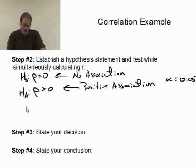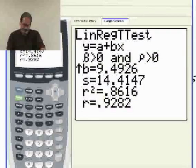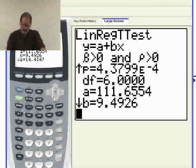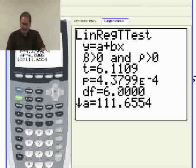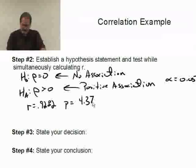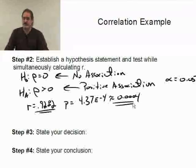Okay, so I know that r equals 0.9282, and the p-value was 4.37 times e to the negative 4, which is approximately 0.0004. So this correlation looks like it's pretty strong. This p-value is saying it's probably not by chance, that it looks like there really is a trend. So state your decision. I'm going to reject the null hypothesis.